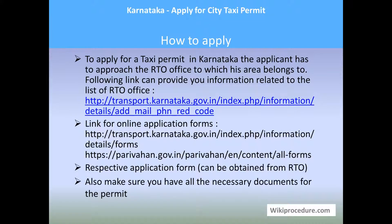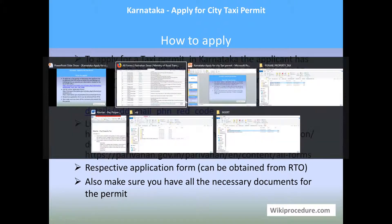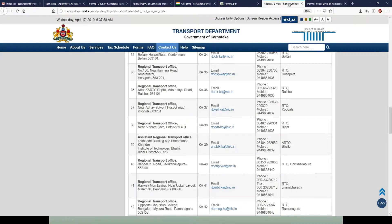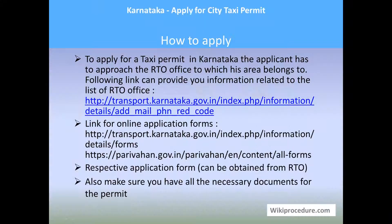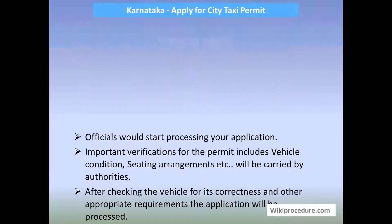Let us see how to apply in person. To apply for a taxi permit in Karnataka, you must go to the RTO office concerned for your area. A link is provided to reach the Karnataka State Portal contact page to help you find the correct RTO office address. Note the address and go to the RTO office directly. You can download the application form through the online links provided. Make sure you have all the required documents, as a missing document will result in your application being rejected.